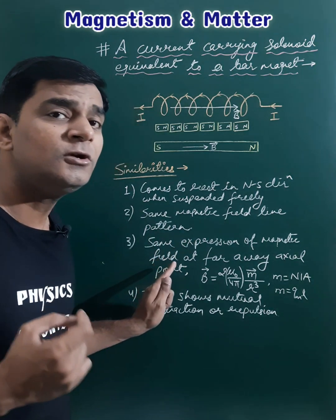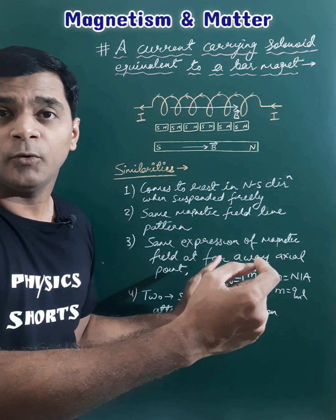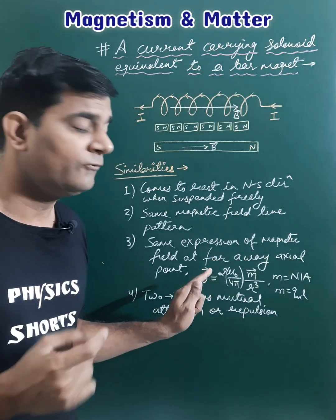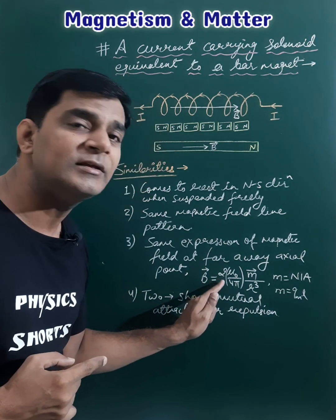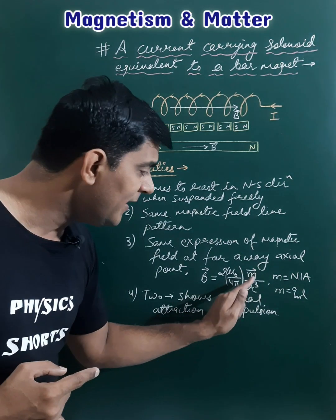Third, the expression of magnetic field at the axial point for large distance is also the same for both cases: B equals 2 mu naught upon 4 pi times m upon r cubed.